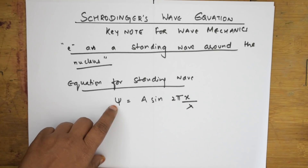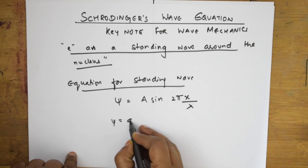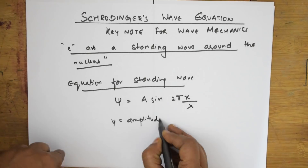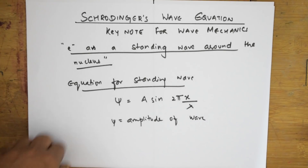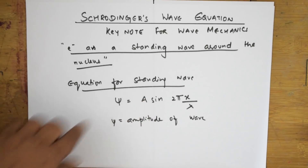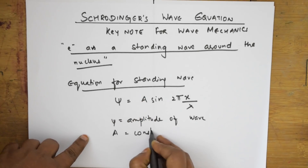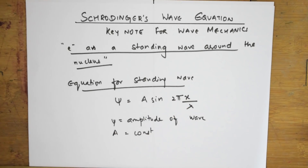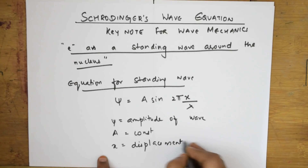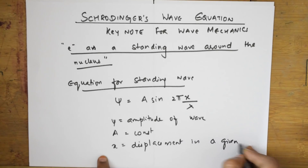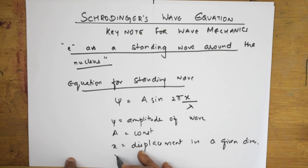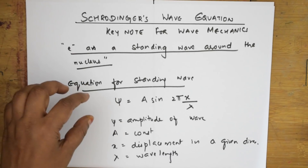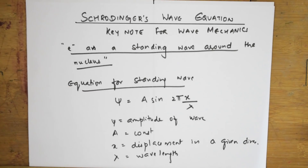What is ψ? Psi is the mathematical function which represents the amplitude of the wave — basically the height of the wave. A is a constant. x is displacement in a given direction. And λ, as you know, is the wavelength. With this formula of the standing wave equation, Schrödinger gave us a derivation which we start now.